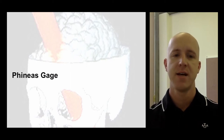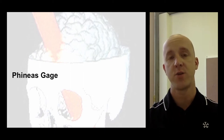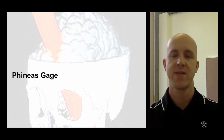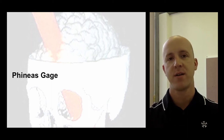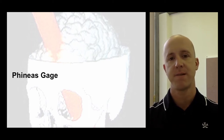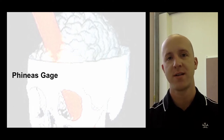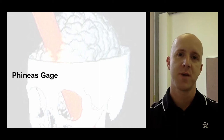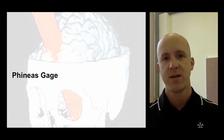Phineas Gage was a very famous case — a man working on a railway whose job was to push dynamite down into holes and walk away until it exploded. As you can see from the image, there is a spike effectively travelling through a man's head, and that's what happened to Phineas. He pressed down on the tamping iron too hard, set the dynamite off, and as he was leaning forwards, the spike was propelled directly through his head. For most people, that would be more than enough to kill them.